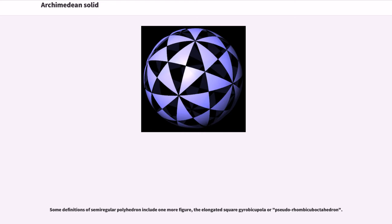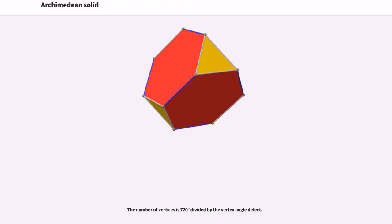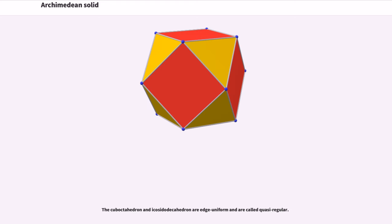Some definitions of semi-regular polyhedron include one more figure, the elongated square gyrobicupola or pseudorhombicuboctahedron. The number of vertices is 720 degrees divided by the vertex angle defect. The cuboctahedron and icosidodecahedron are edge uniform and are called quasi-regular.